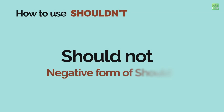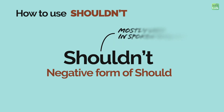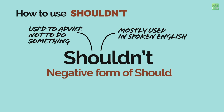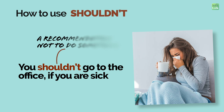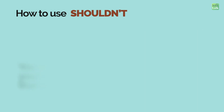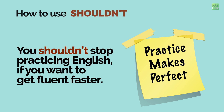Now let's learn how to use Shouldn't. The negative of Should is 'Should not,' and the contracted form is Shouldn't. We usually use Shouldn't in spoken English as it sounds more natural in conversations. Shouldn't is used to advise someone not to do something because it could be bad or wrong. 'You shouldn't go to the office if you are sick.' 'You shouldn't spend your whole salary on that phone.' 'You shouldn't stop practicing English if you want to get fluent faster.' All of these sentences are advice or recommendations about not doing something.